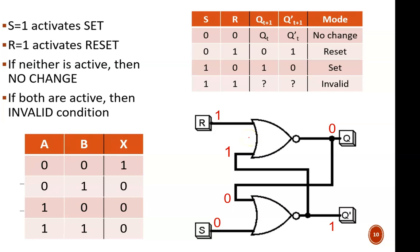And finally, let's go back into no-change mode with S equal to zero and R equal to zero. This causes no difference in the NOR gate outputs, and thus no change to Q and Q'.